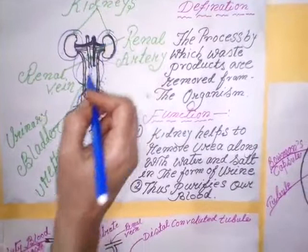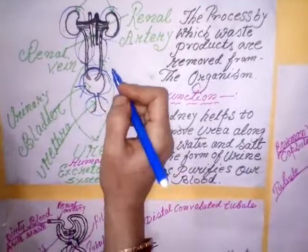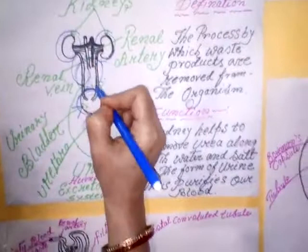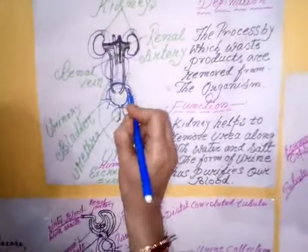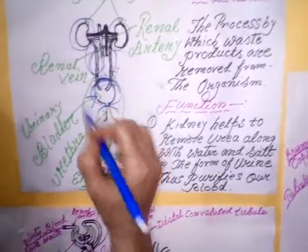From each kidney, a tube-like structure arises and these are termed as ureter. The ureter opens into the bladder — this is the urinary bladder. The urinary bladder ends in a small tube known as the urethra.